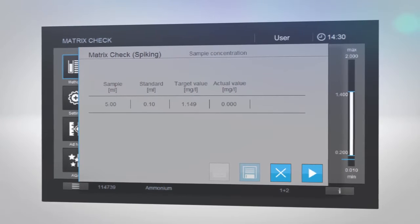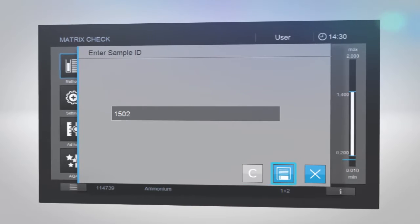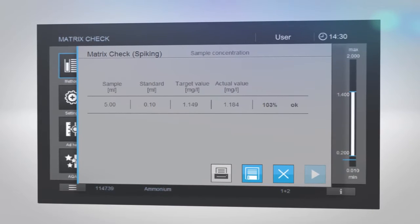If your result is within the range of the matrix check, you have no interferences in your matrix, and your original result shows the correct amount of sample you measured.